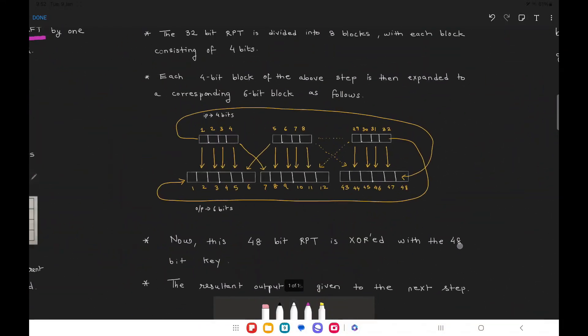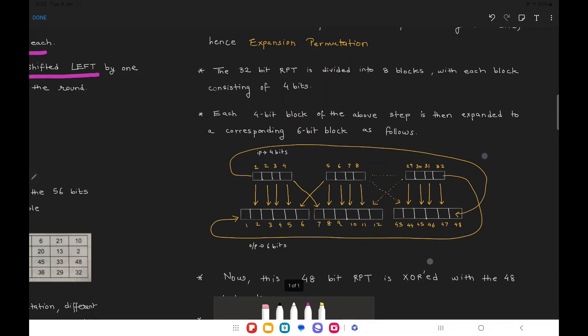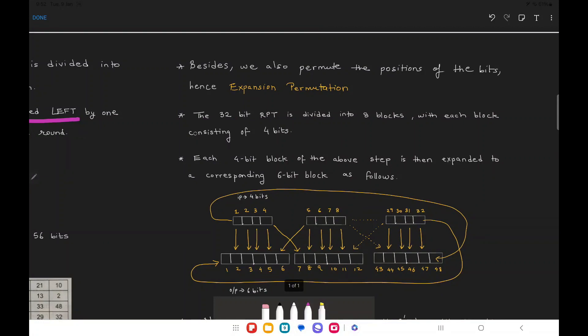This is how an expansion permutation step looks like in detail. The 32-bit RPT is divided into eight blocks, with each block consisting of four bits. These four-bit blocks occupy eight rows, so in total it is 32 bits in size.